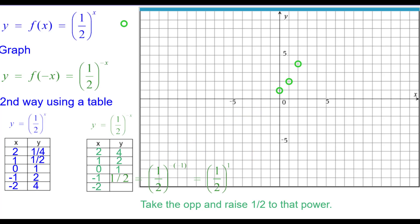When x is negative 1, the opposite of negative 1 is positive 1. So that keeps 1 half. So negative 1 comma 1 half. And when x is negative 2, the opposite of negative 2 is positive 2. Squaring 1 half is 1 quarter.